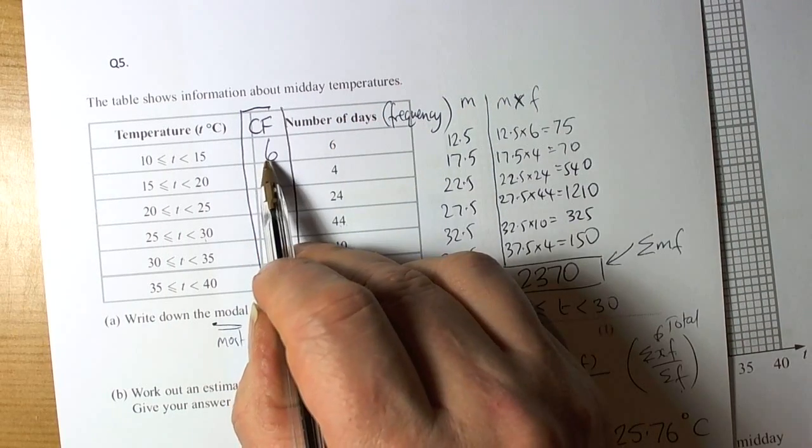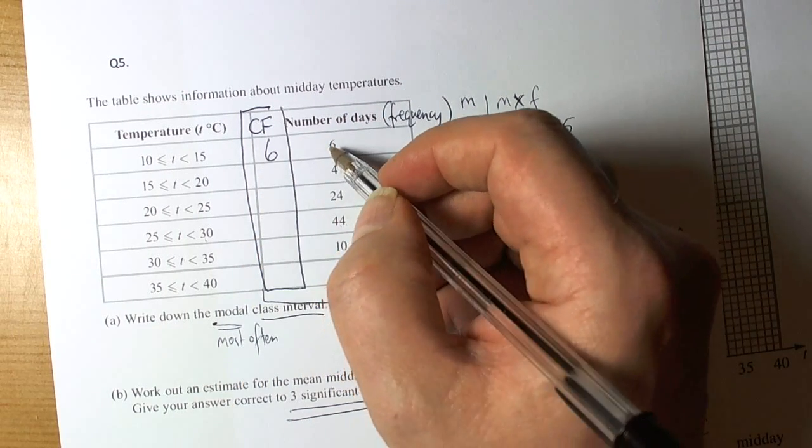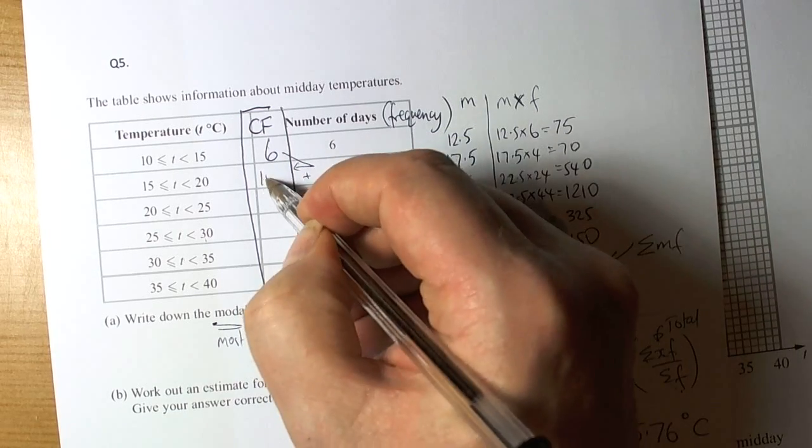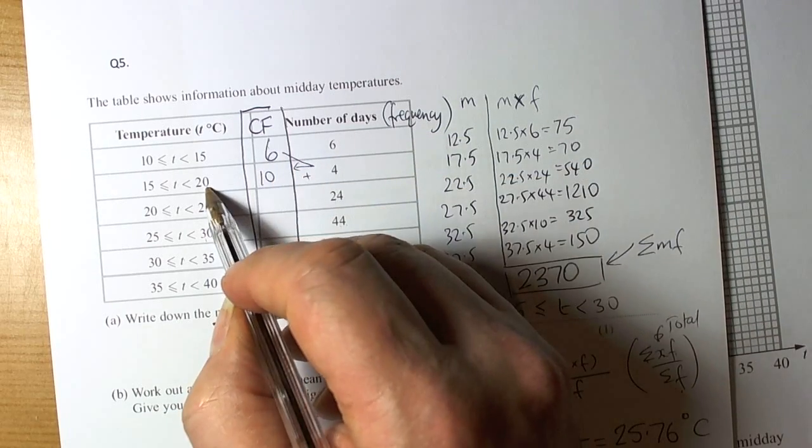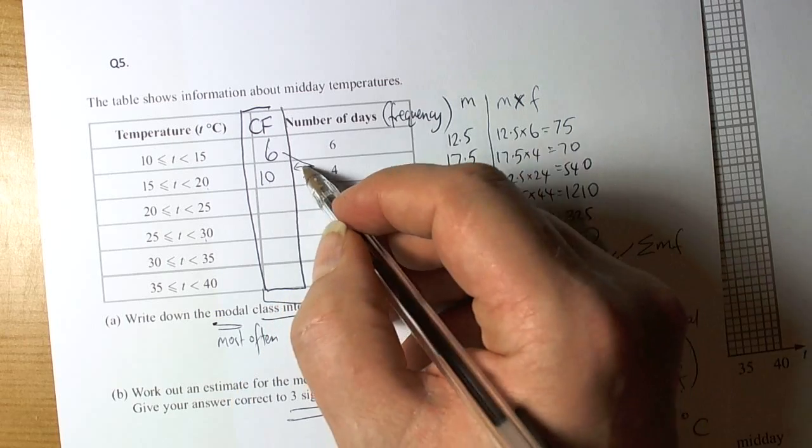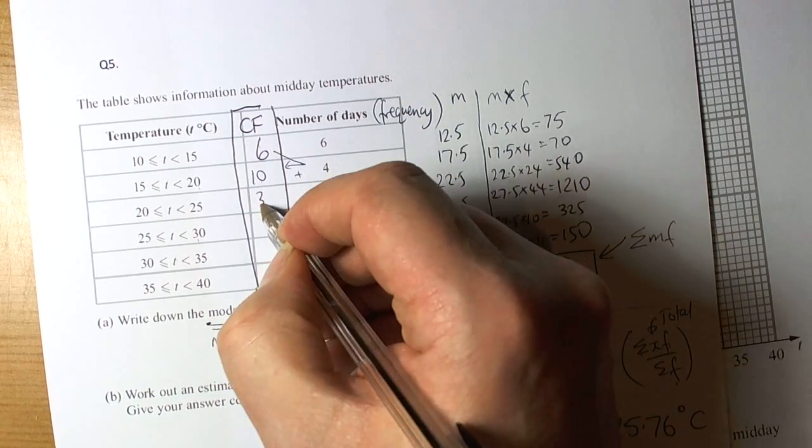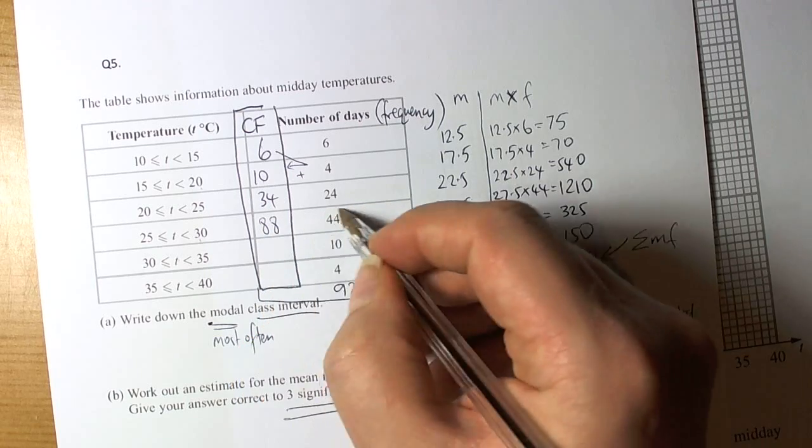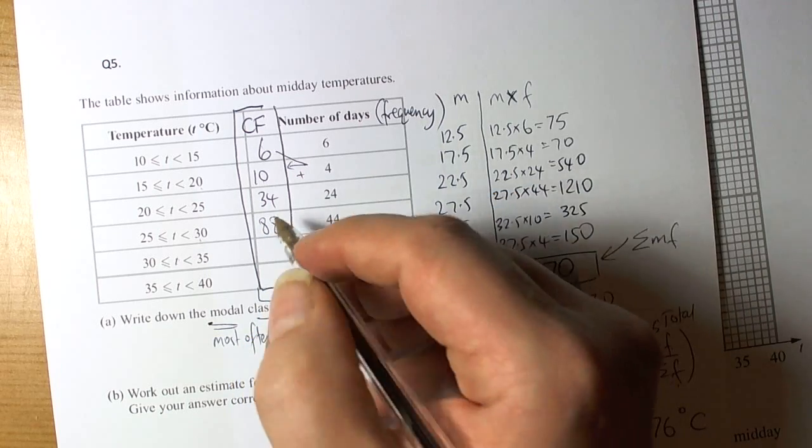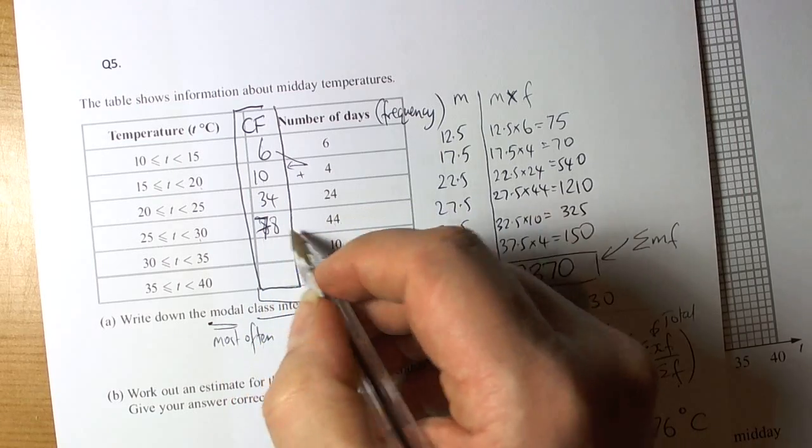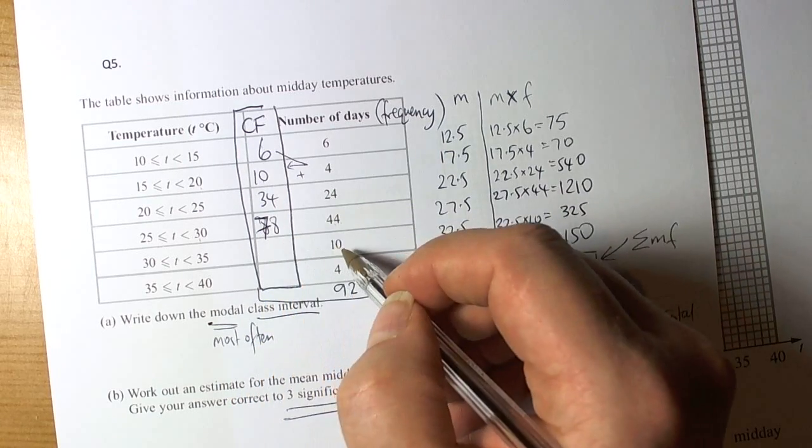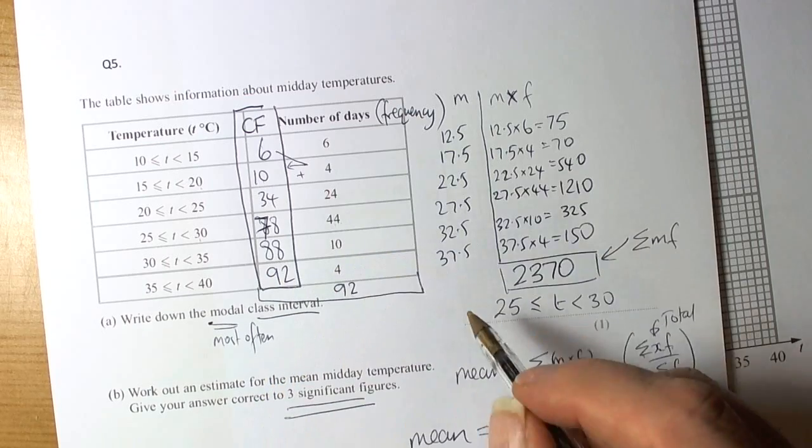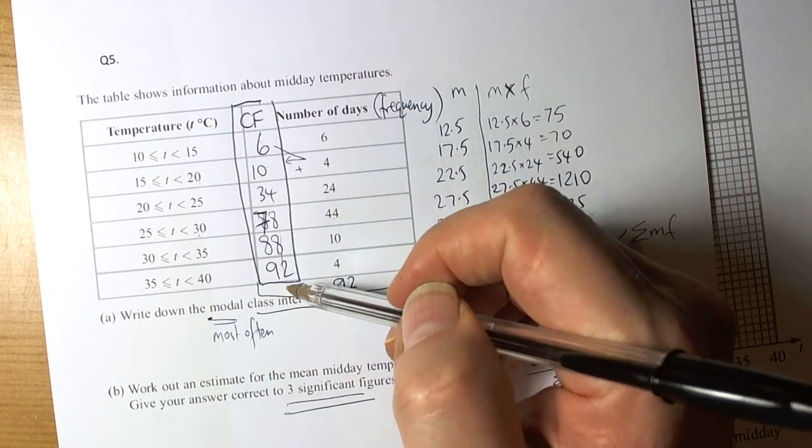And we're going to work out the cumulative frequencies. So the first interval had a frequency of 6. Cumulative means add up as you go along, so we're going to add on the 4 to make 10 so far. So up to 20 degrees, there are 10 days. Then we're going to add on the 24. Then we're going to add on the 44. Then we're going to add on the 10. So 34 plus 44 is 78, and then 78 plus that is 88. And then 88 plus 4 is 92. So those are our cumulative frequencies to use.